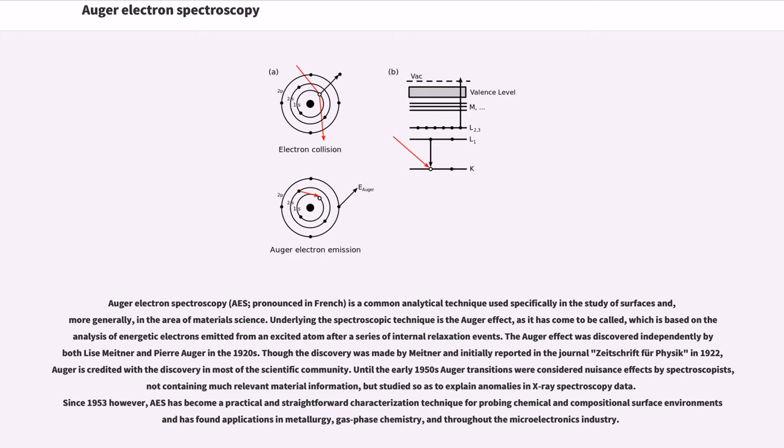Until the early 1950s, Auger transitions were considered nuisance effects by spectroscopists, not containing much relevant material information, but studied to explain anomalies in X-ray spectroscopy data.